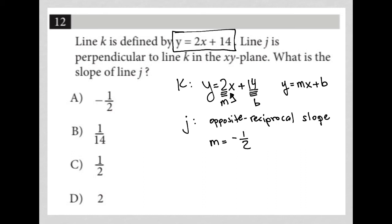So the slope of line J would be negative one-half. The question asks, what is the slope of line J? We just found it. Therefore, our answer is choice A.